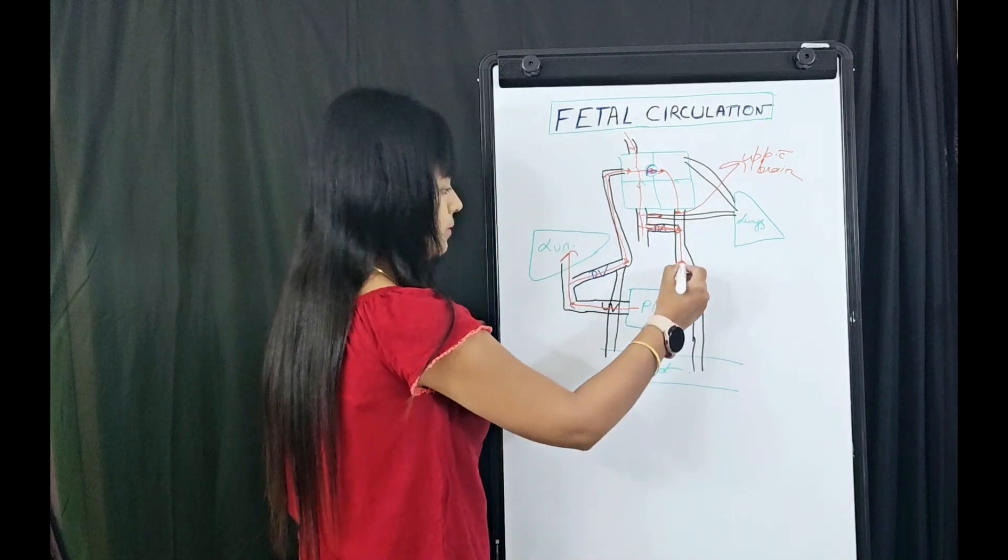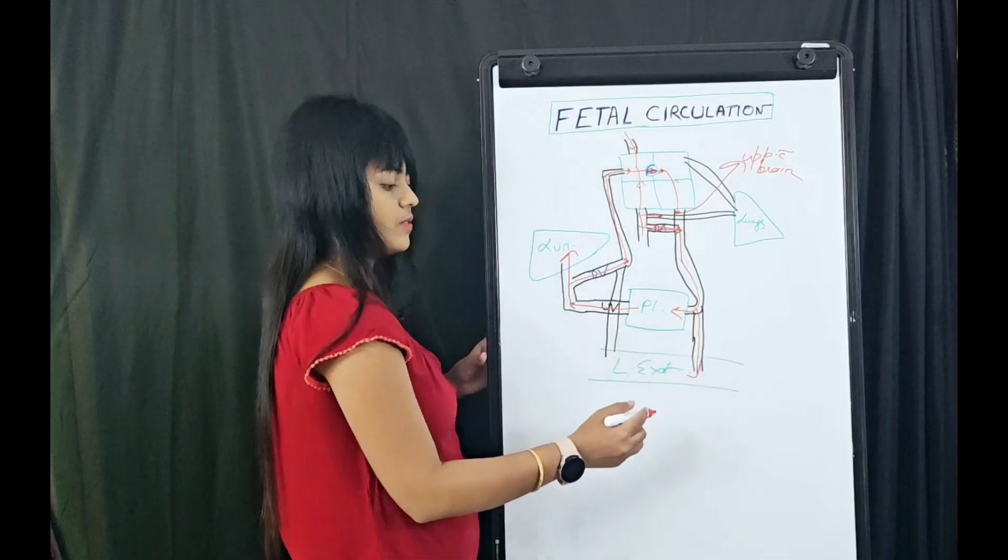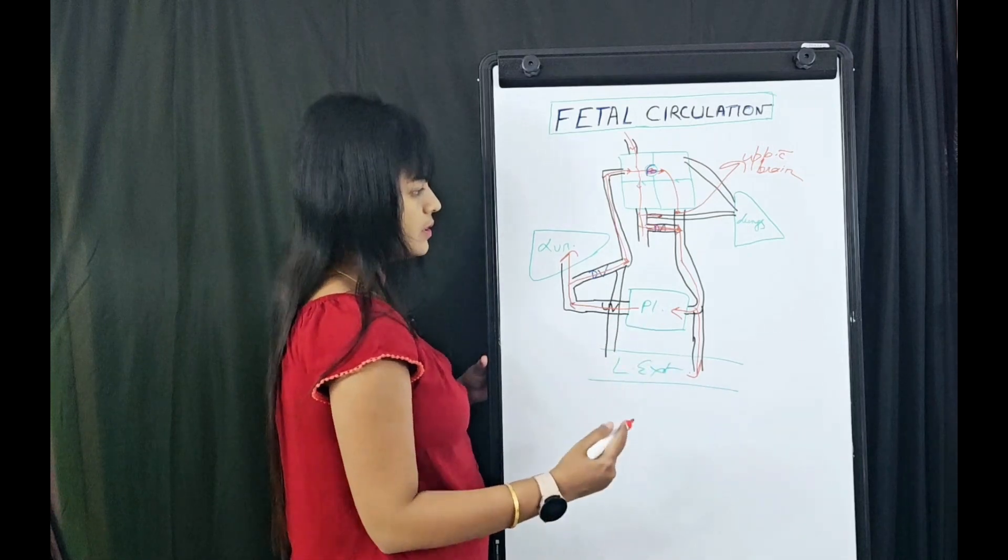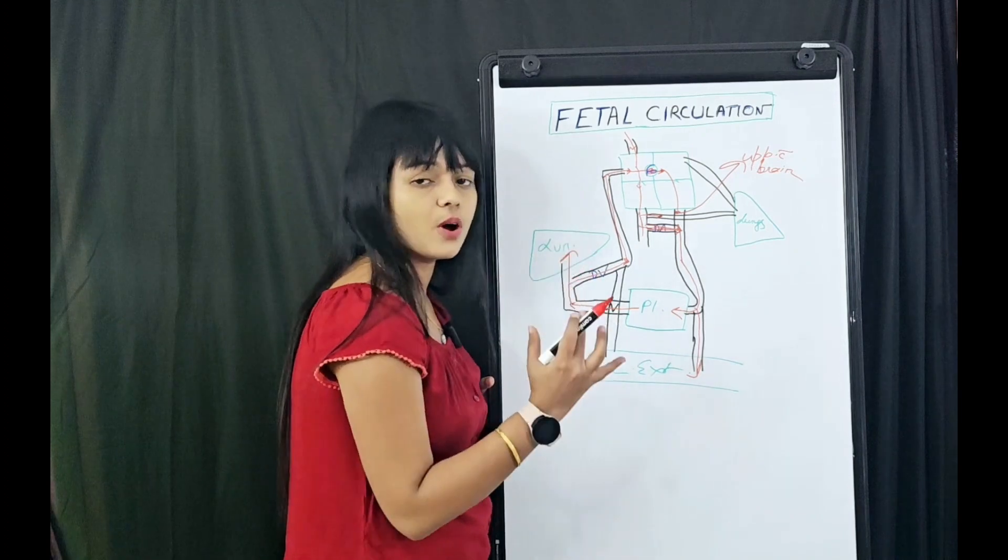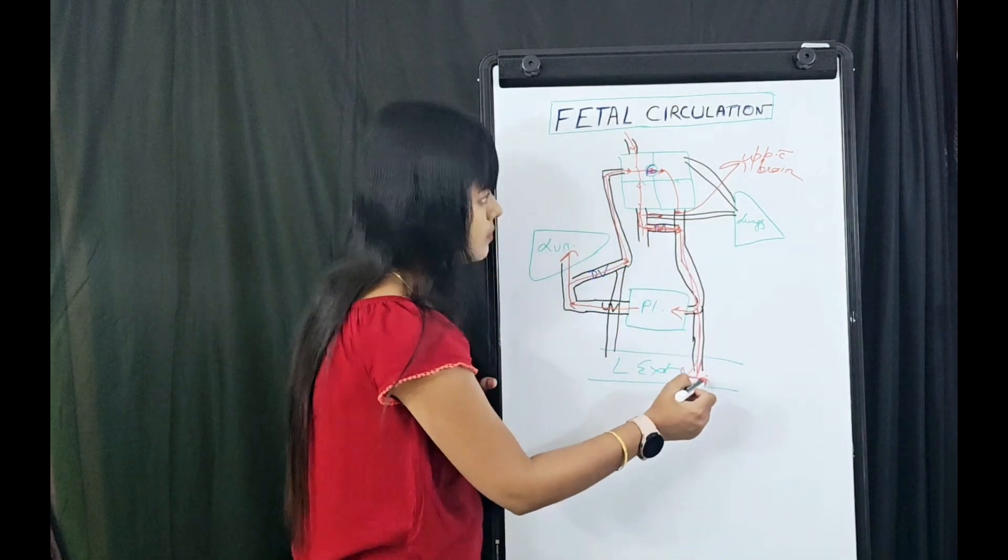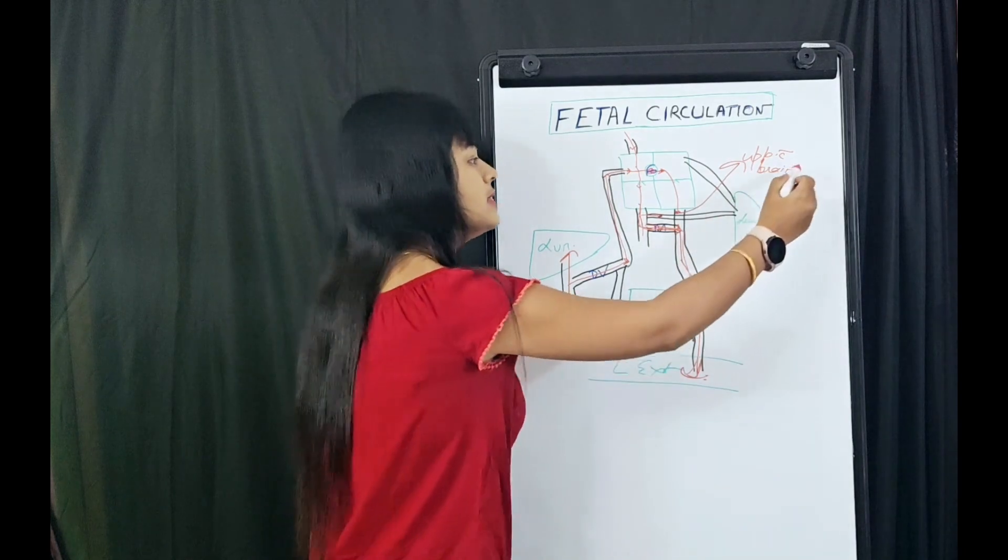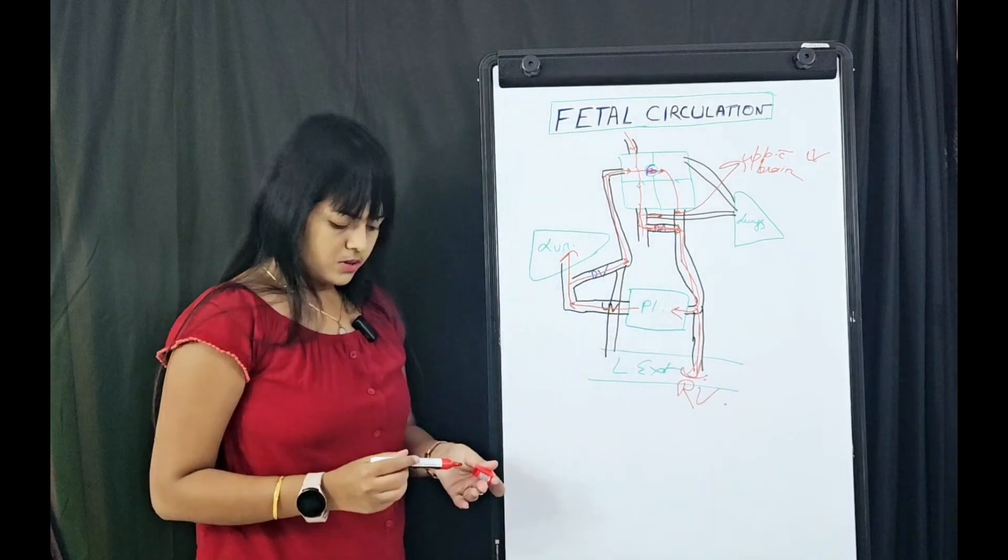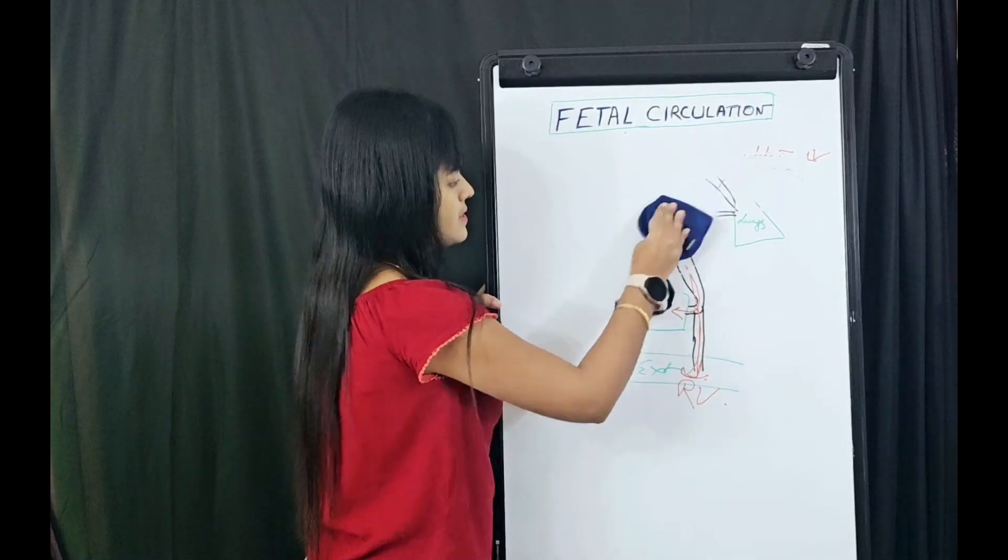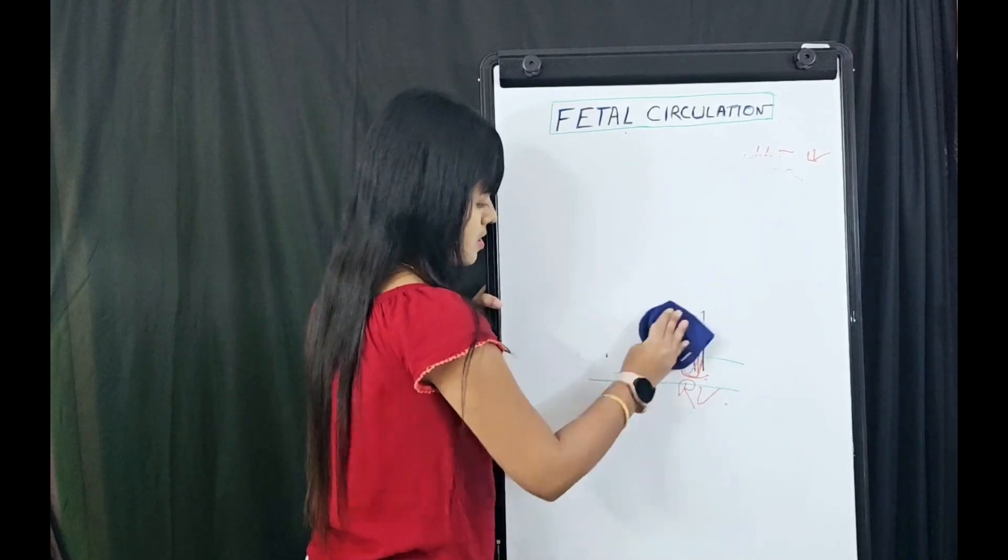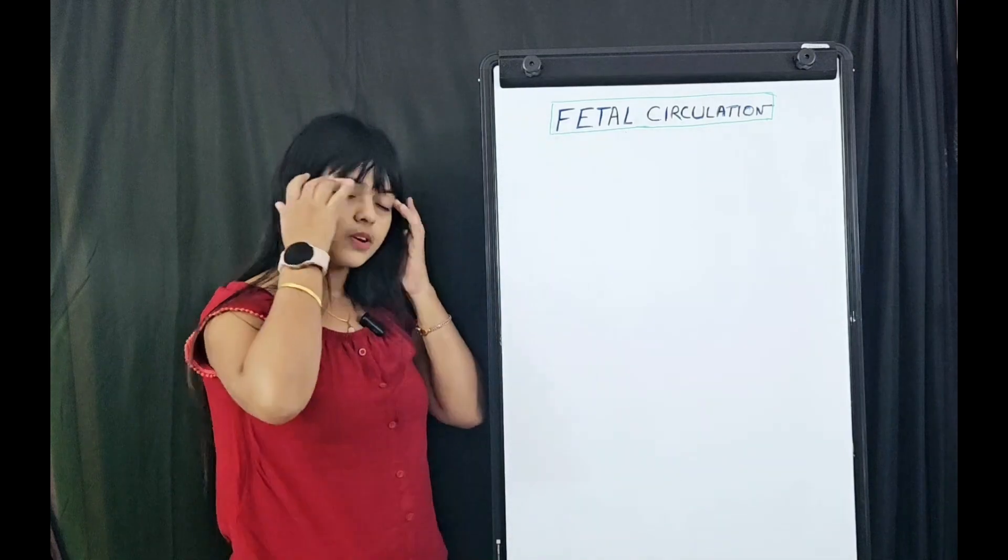From descending aorta, it is going via umbilical arteries to placenta, and the other portion of the blood is going to perfuse the lower extremities. You see, the main portion of the lower extremities is getting perfused by the blood from right ventricle, and the upper extremities are being perfused by more oxygenated blood from the left ventricle. So if you have been asked this topic in the exam, try to draw this type of schematic diagram. That will help you get good marks and also avoid mistakes.